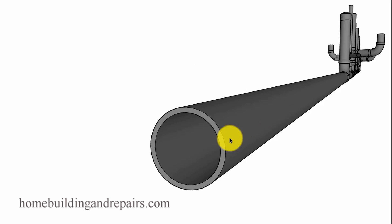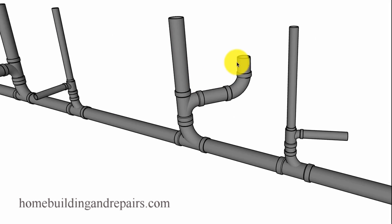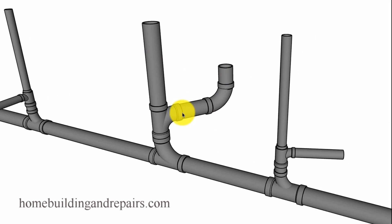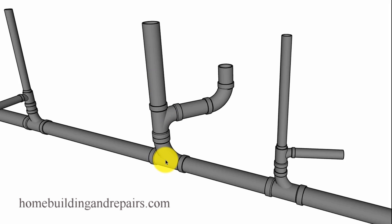There is a thing called fixture units, which is a unit of measurement for a drain line. A toilet is about three units, a sink might be between one or two, and a bathtub or shower is usually two. So for a bathroom with a toilet, a sink, and a bathtub, that would be between five and six fixture units.